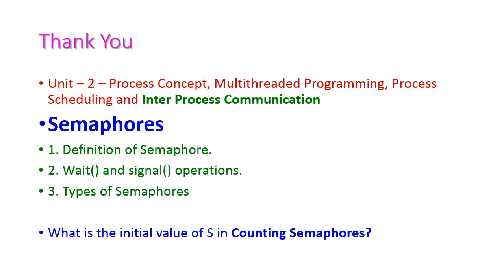Up to this point, we have seen the definition of semaphore, the wait and signal operations, and the two types of semaphore — binary semaphore and counting semaphore. I hope you understand this class very well. Now it's question time: students, please write what is the initial value of S in the counting semaphore — you can write your answer in the comment box. In the next class we will see another topic from inter-process communication. Thank you.